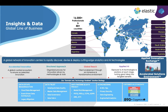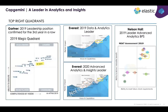On Insights and Data: we have 16,000 professionals across 40-plus countries, running the gamut from getting and organizing data to delivering and deploying insight into transactional systems. In terms of credentials, on Gartner, Everest, and Nelson Hall evaluations of vendors in this space, we come out pretty strong — and we're rather proud of that.